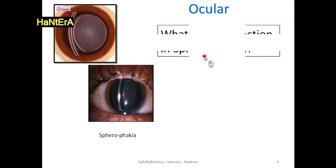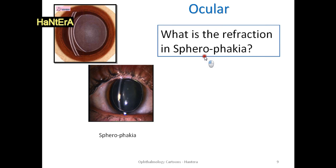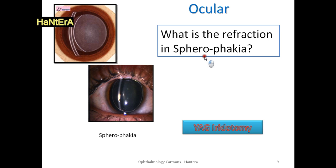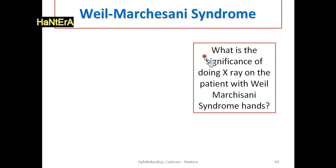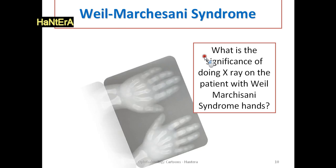Refraction through the thickened lens due to relaxed zonules will be myopic, while refraction around the lens — essential ectopia — will be hyperopic. Prophylactic YAG iridotomy is important as prophylaxis from pupillary block glaucoma. Delayed carpal ossification is pathognomonic for Weill-Marchesani syndrome.